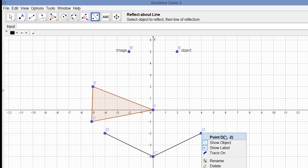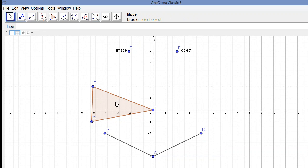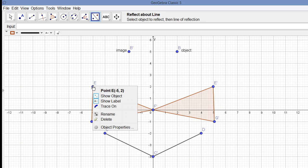Let's look at the polygon now. We have triangle EFG, reflecting in the y-axis to obtain E prime G prime F prime. If we look at the coordinates of E, we see (-5,2). E prime would be (5,2).